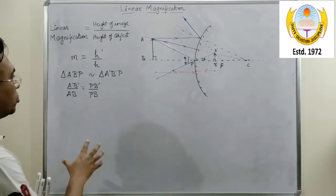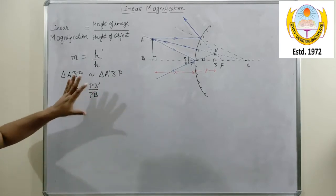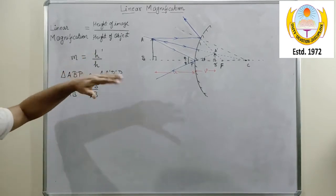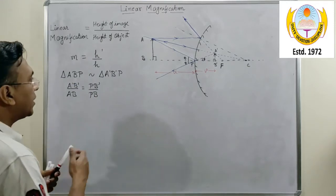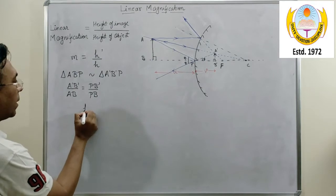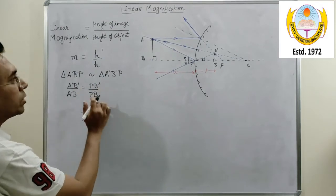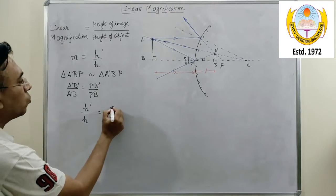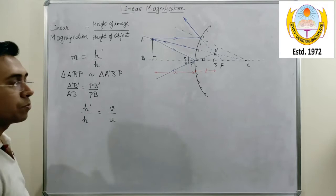Now, if I substitute the values of U and V in this expression along with h' and h, that is the height of the image and height of the object, then I can rewrite this expression as h' upon h equals to, instead of PB' I will write V, and instead of PB I will write U.